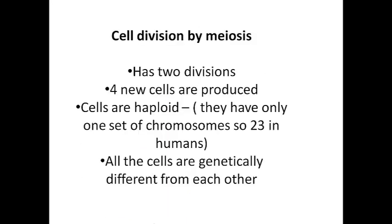To sum up meiosis: there are two divisions — firstly when the homologous pairs separated, and again when the chromatids of each chromosome were pulled apart. There were four new cells, they are haploid — they only have one set of chromosomes, one copy of each chromosome, so 23 in humans — and all the cells were genetically different from each other.